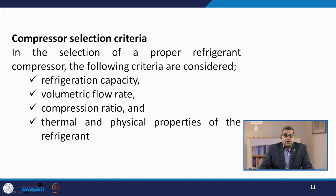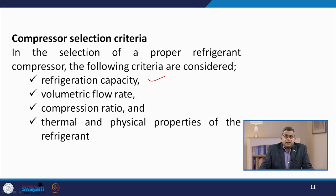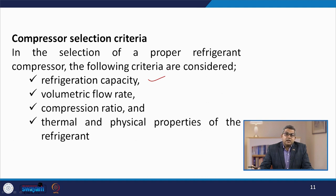Given the variety of compressors available, there must be certain criteria for compressor selection. These include: the required refrigeration capacity, the volumetric flow rate needed — which depends on the refrigeration cycle design and refrigerant used — the compression ratio required, and the thermal and physical properties of the refrigerant, which are essential for assessing compatibility with the compressor.